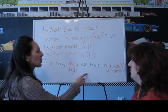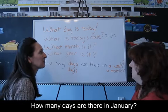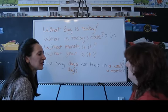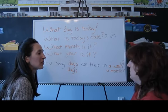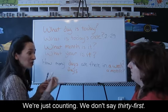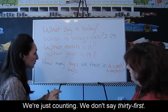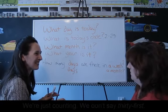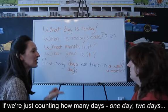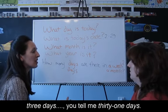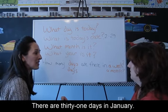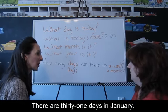How many days are there in January? Well, how many days? We're just counting. We don't say 31st — we say 31. If we're just counting: one day, two days, three days — you tell me 31 days. There are 31 days in January.